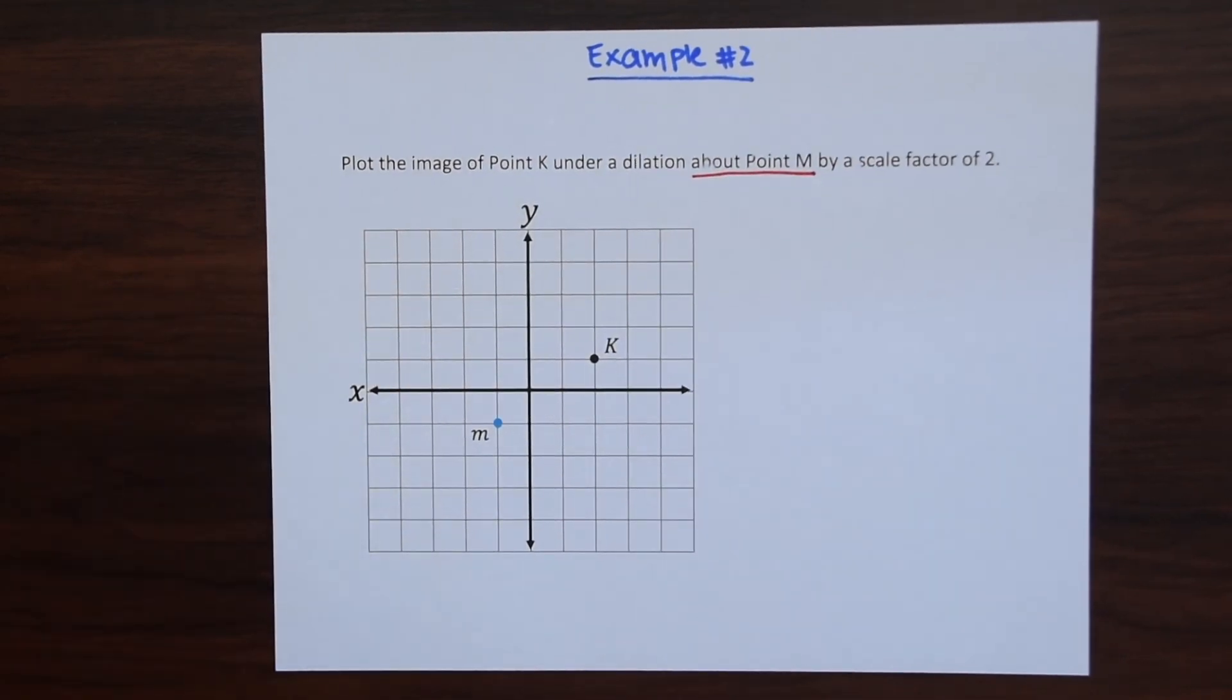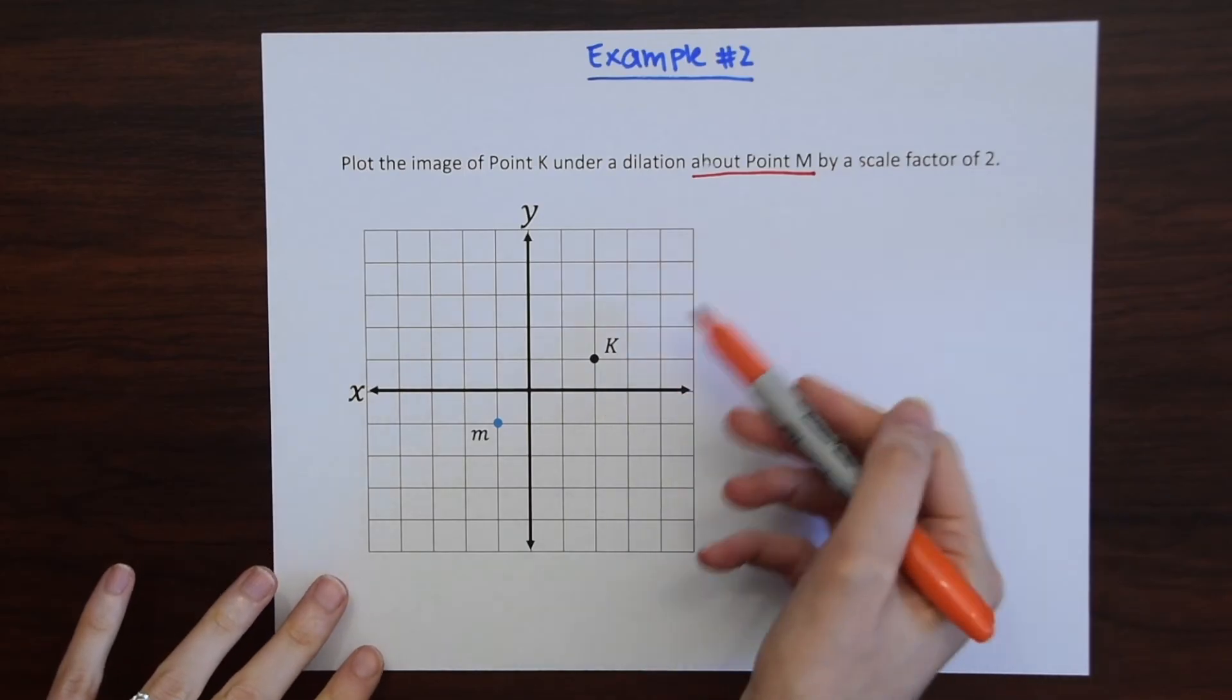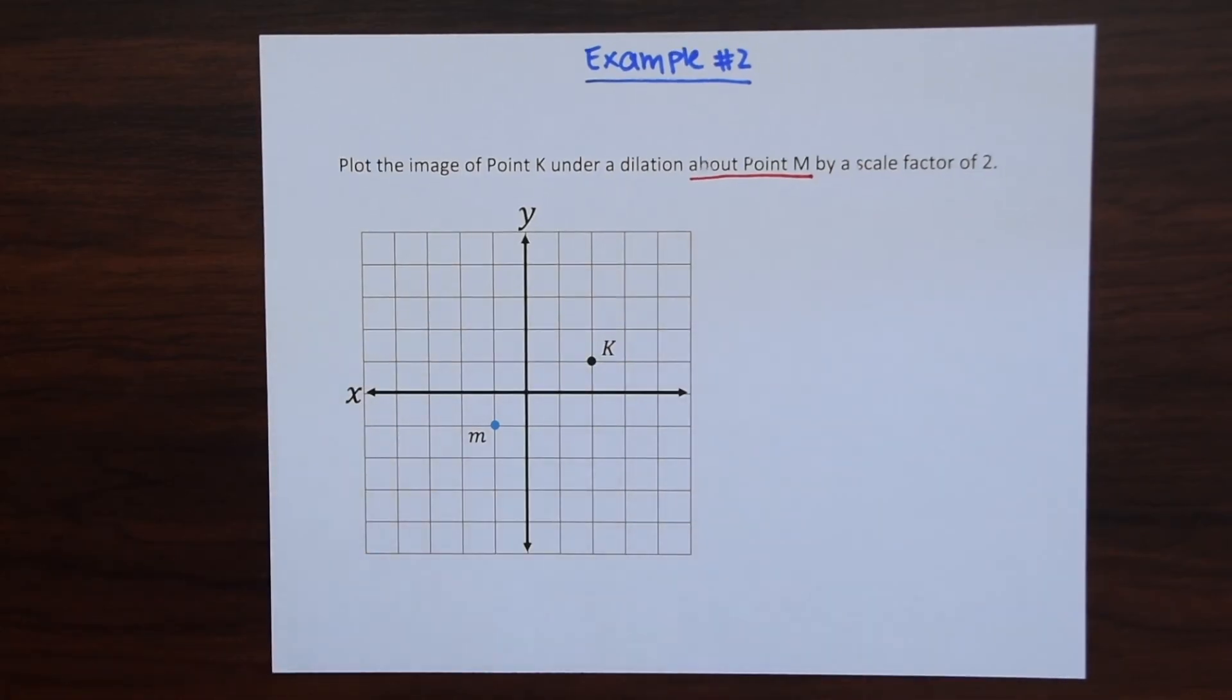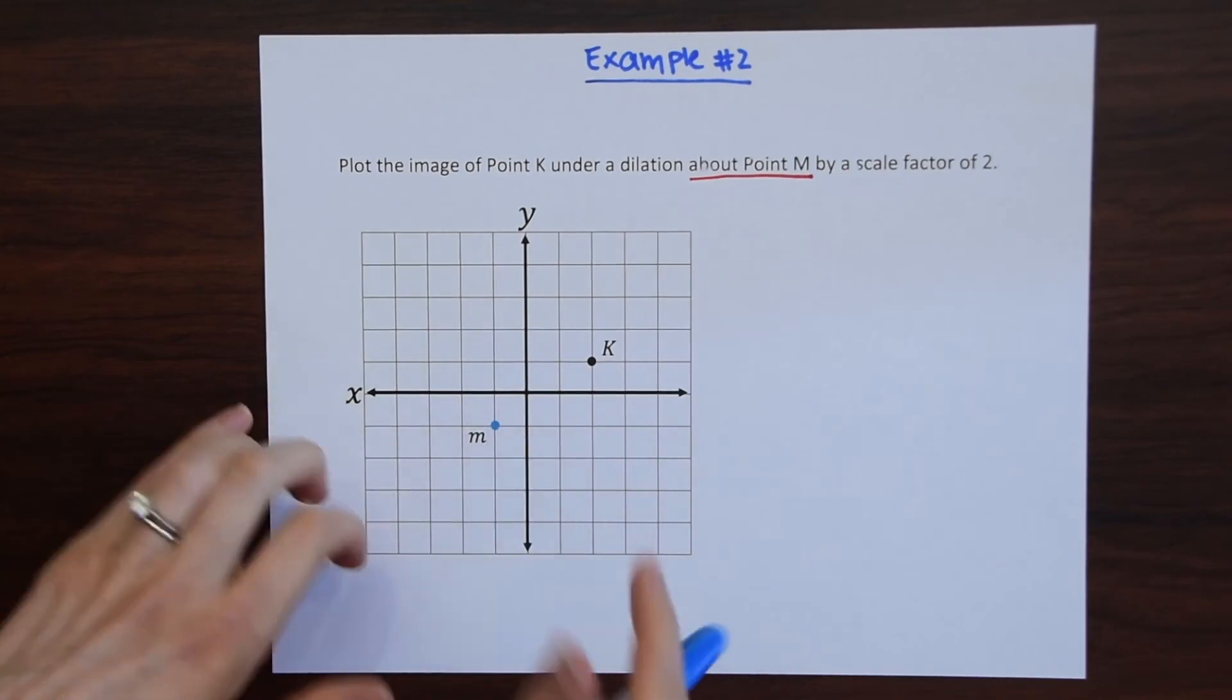So instead of just looking at point K and multiplying each coordinate point times two we're going to have to do an extra step here. So we want to know, we basically need to think about, how far is K in relation to M.